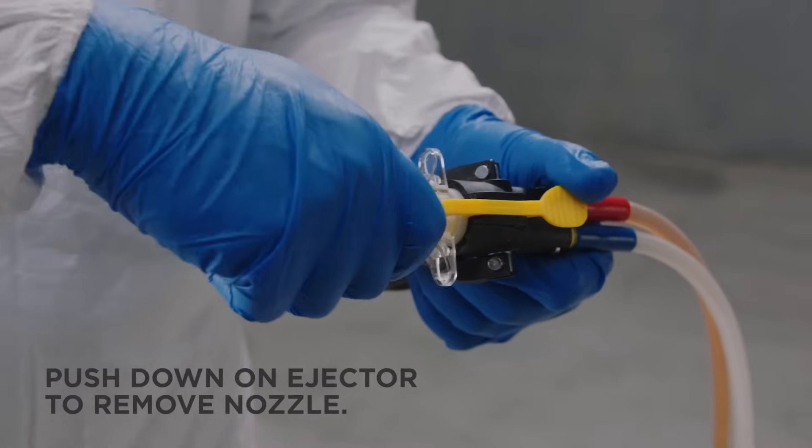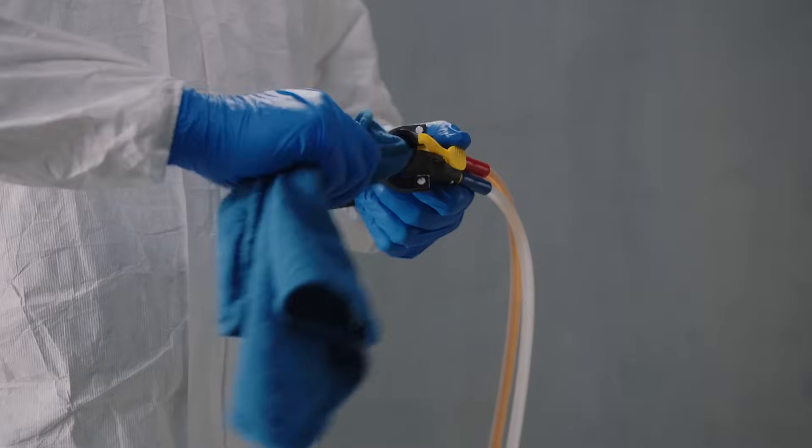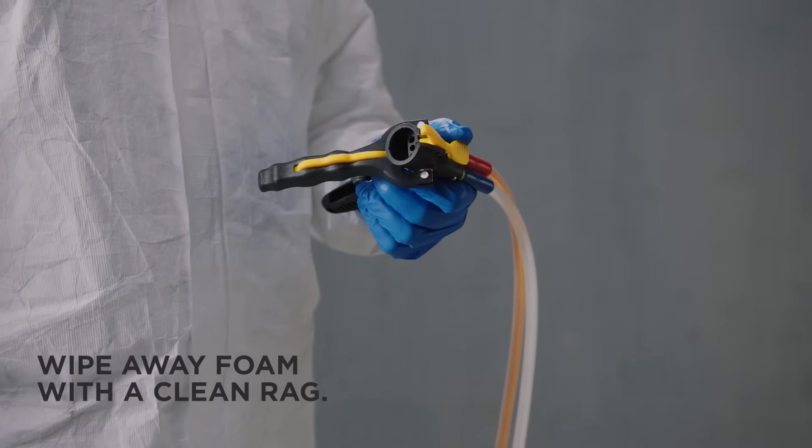Once spraying is complete, push down on the ejector to remove the nozzle. Next, clean the product from the dispenser face with a clean rag.